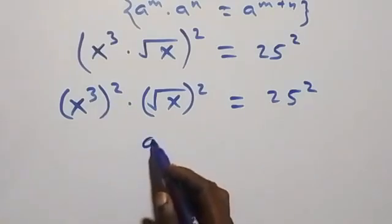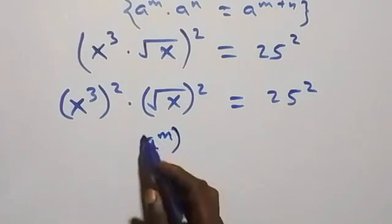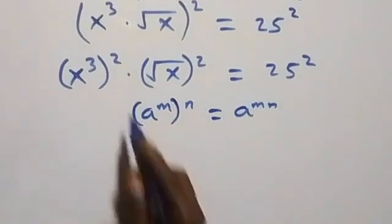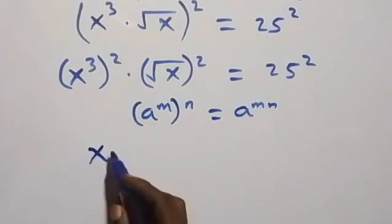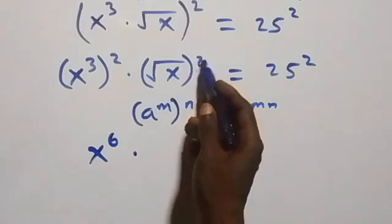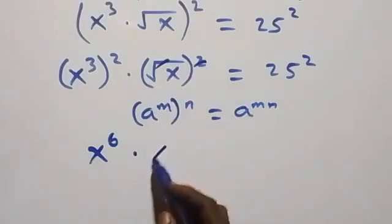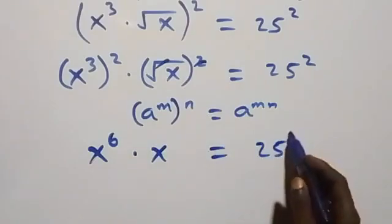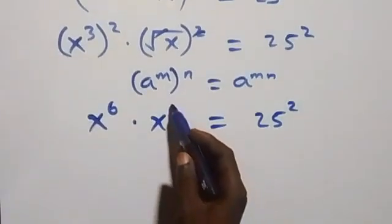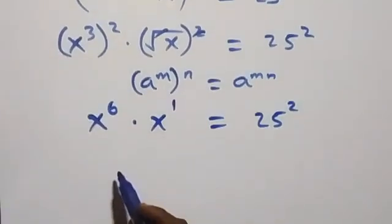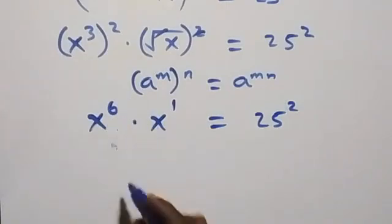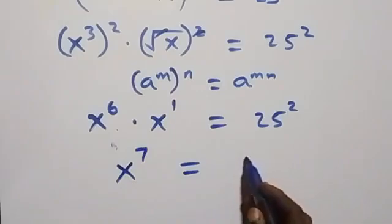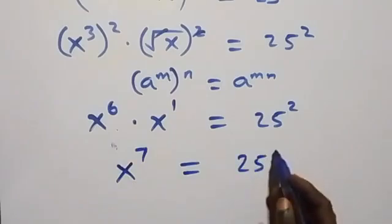Using the rule that a raised to power m, raised to power n, equals a raised to power m times n, we get 2 times 3, which is x raised to power 6. Then times x — since square root of x is x raised to power 1 — combining powers gives us x raised to power 7 equals 25 squared.